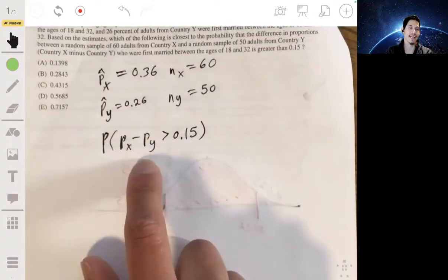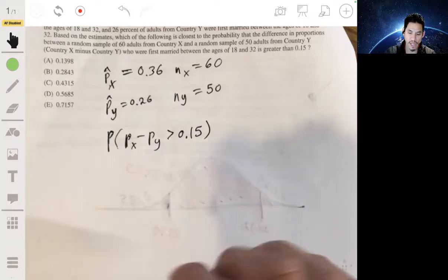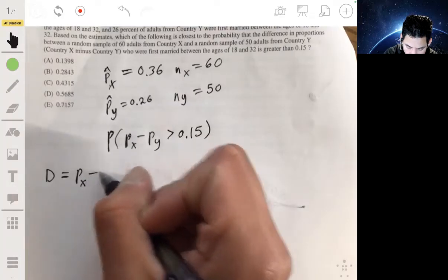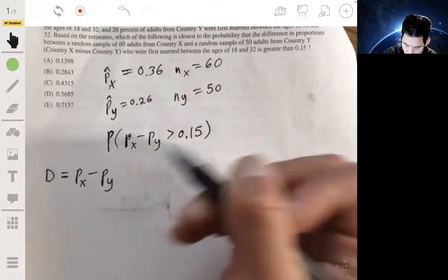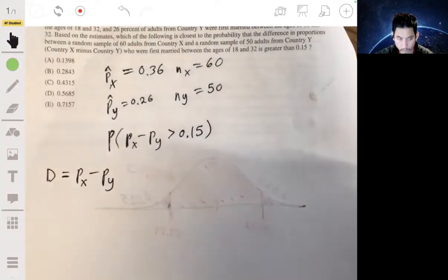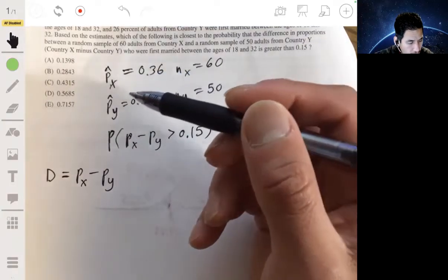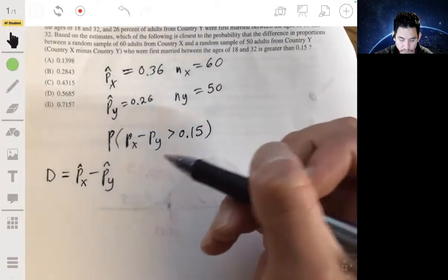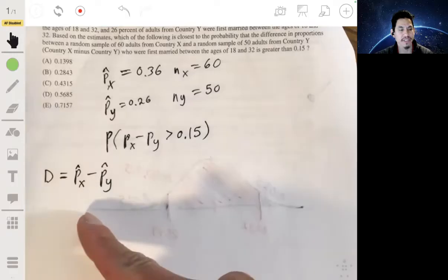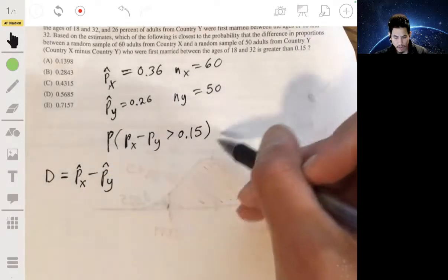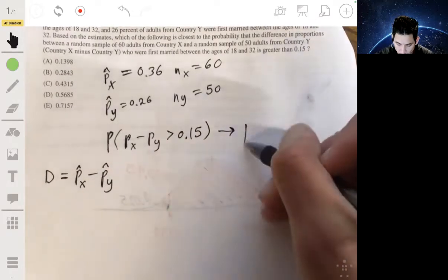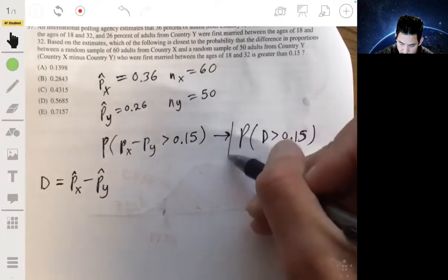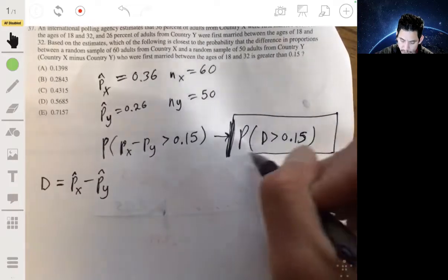So what we're going to look is at a difference in proportions. So we're going to make D equal to P sub X minus P sub Y. And then we're going to look at, we're going to basically just find the probability of D being more than 0.15.